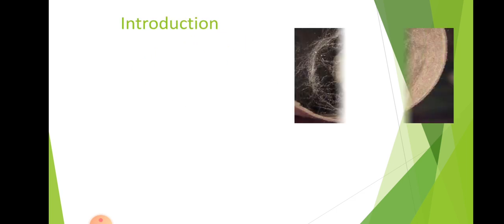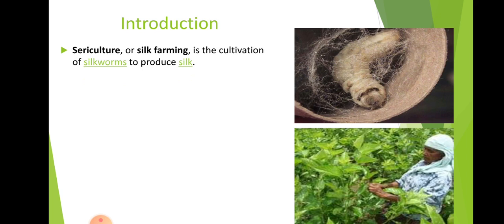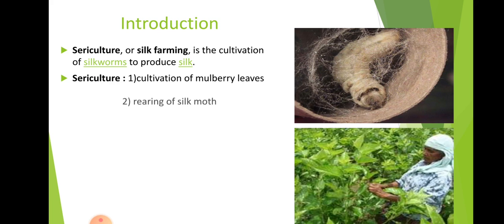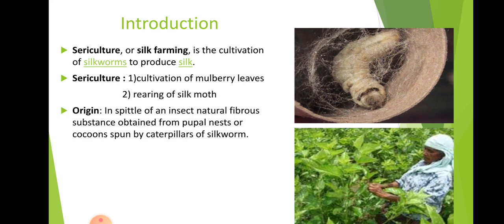So what does Sericulture mean? 'Seri' means silkworm and 'culture' means cultivation of that silkworm to produce more and good quality silk. Sericulture includes two parts: first is cultivation of mulberry leaves and second is rearing of silk moth. Silk is nothing but the spittle of the silkworm — the fiber formed from the mouth of the silkworm, also called a caterpillar.